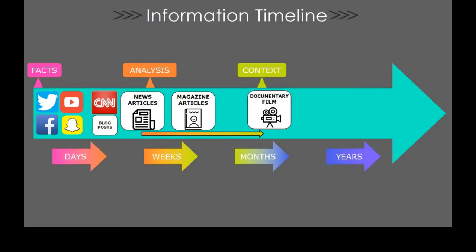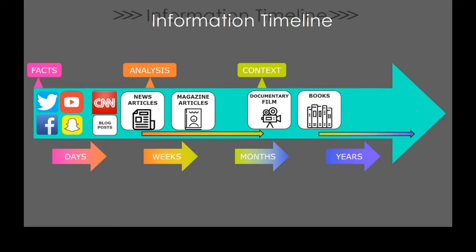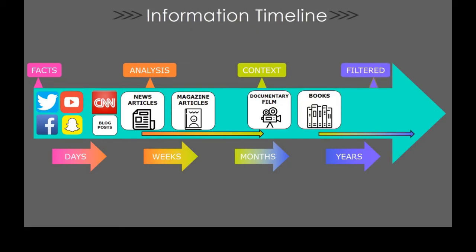Now what happens as we go further on into years? Well, that's when you start to see books being developed. And these resources generally tend to have more filtered information. And so that includes sources like scholarly articles and encyclopedia articles.